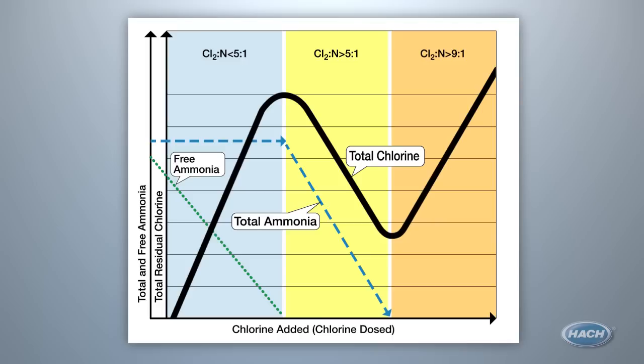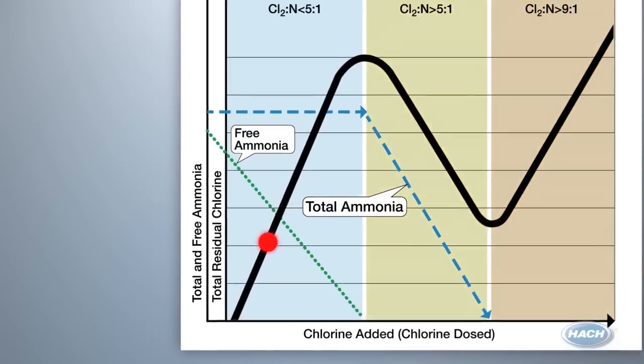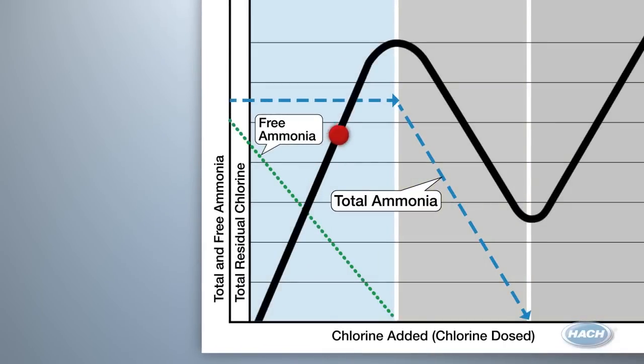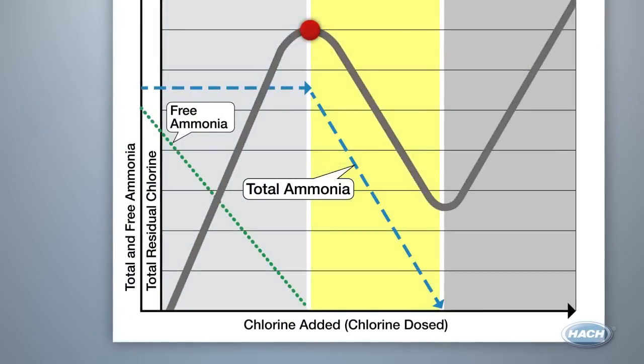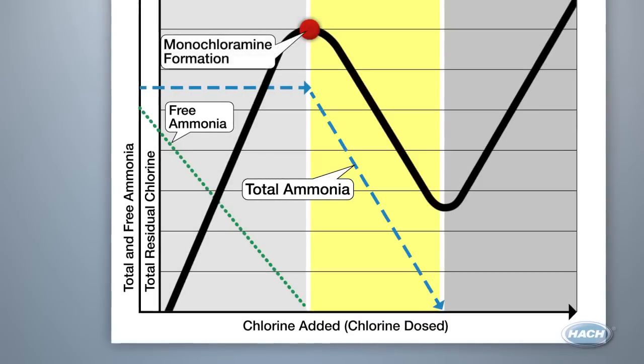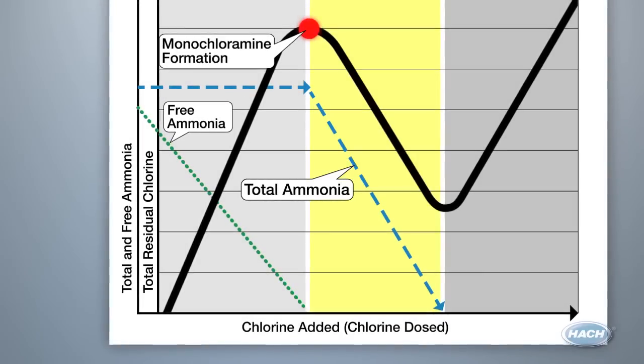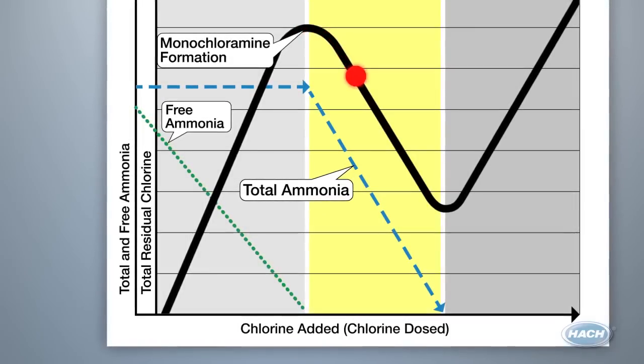So how do you know where your utility's water lies on this chart? Some simple measurements can tell you. For instance, in zone one, you will see total chlorine and a presence of free ammonia. In zone two, you will see total chlorine, monochloramine, total ammonia, but no free ammonia.